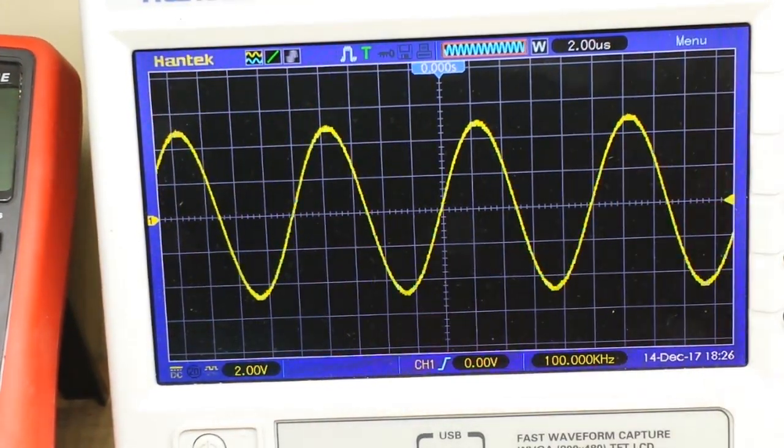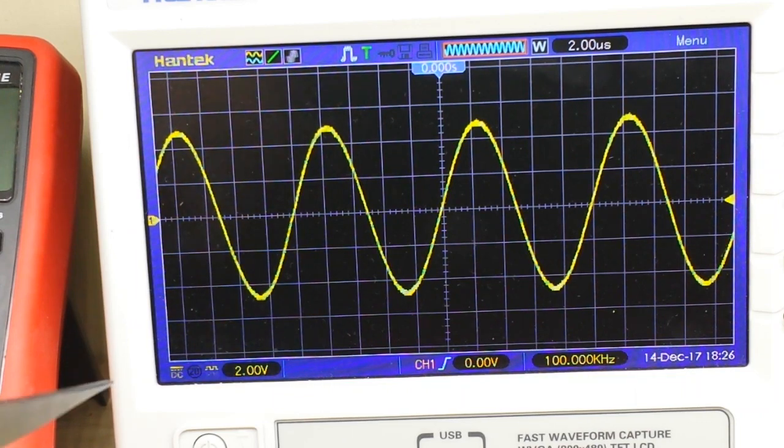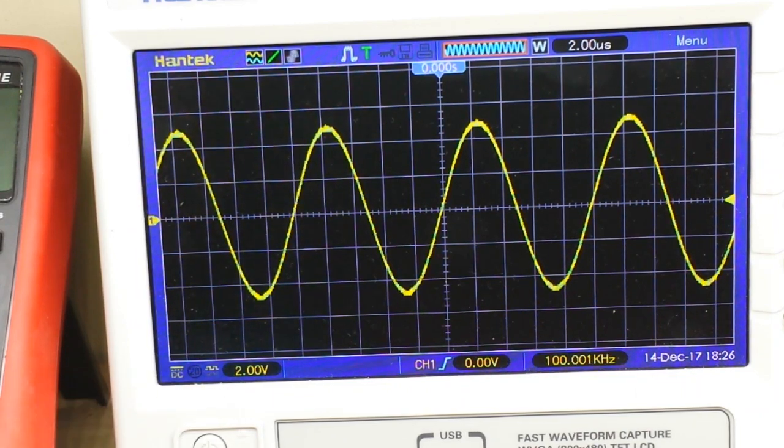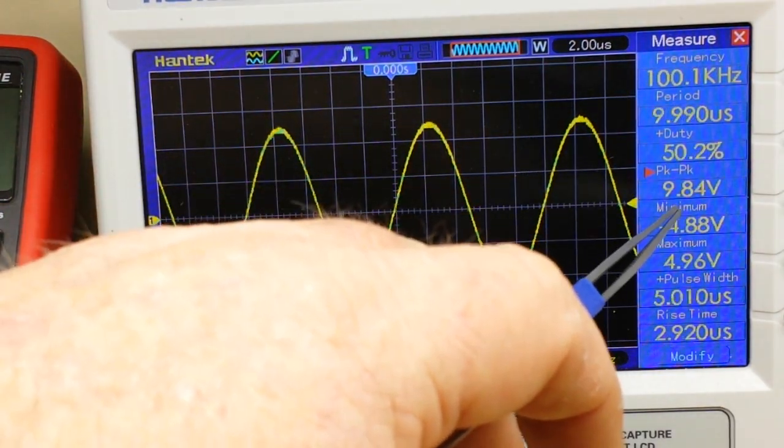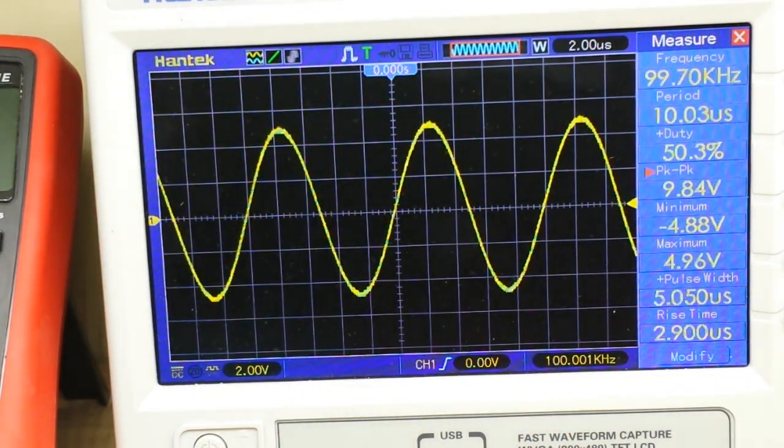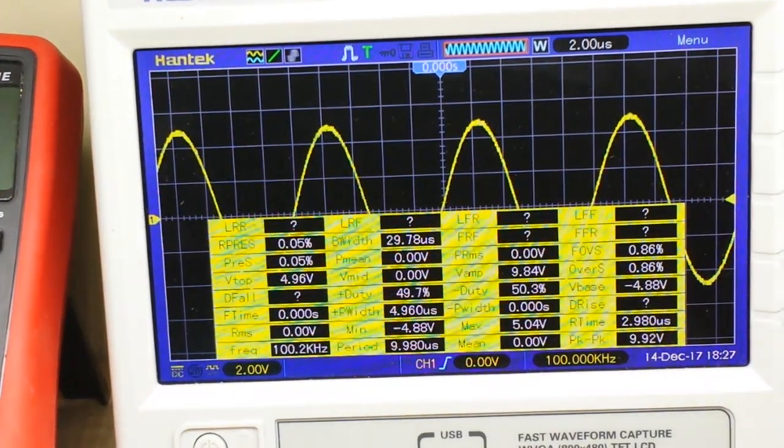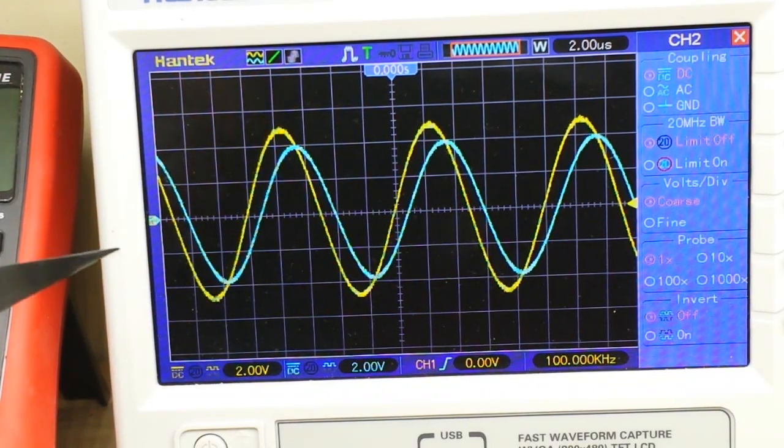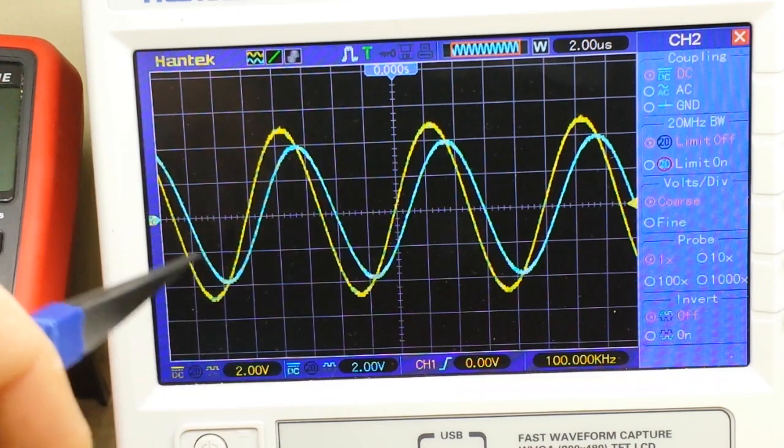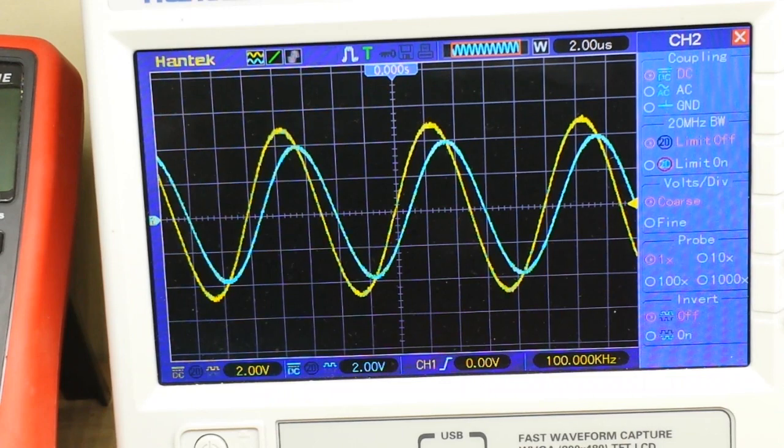Alright, let me get a good picture here for you guys. So, here we have our input signal, channel 1. This is coming directly off the function generator. And you can see we are at 2 volts per division. We're at 9.84 volts peak to peak, 50% duty cycle. And now, let's bring in channel 2. Now, if we take a look here, you see channel 2 also at 2 volts per division. It's just slightly attenuated there and slightly shifted out of phase.